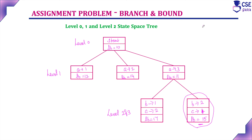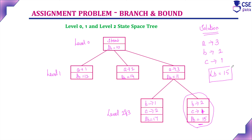The solution is: assign job 3 to person A, assign job 2 to person B, assign job 1 to person C, with a total cost of 15. This is the solution for the given assignment problem using branch and bound technique with the state space tree. We have discussed almost four examples under assignment problem using branch and bound. In the next session, we will move on to the knapsack problem using branch and bound technique. Thank you for watching.